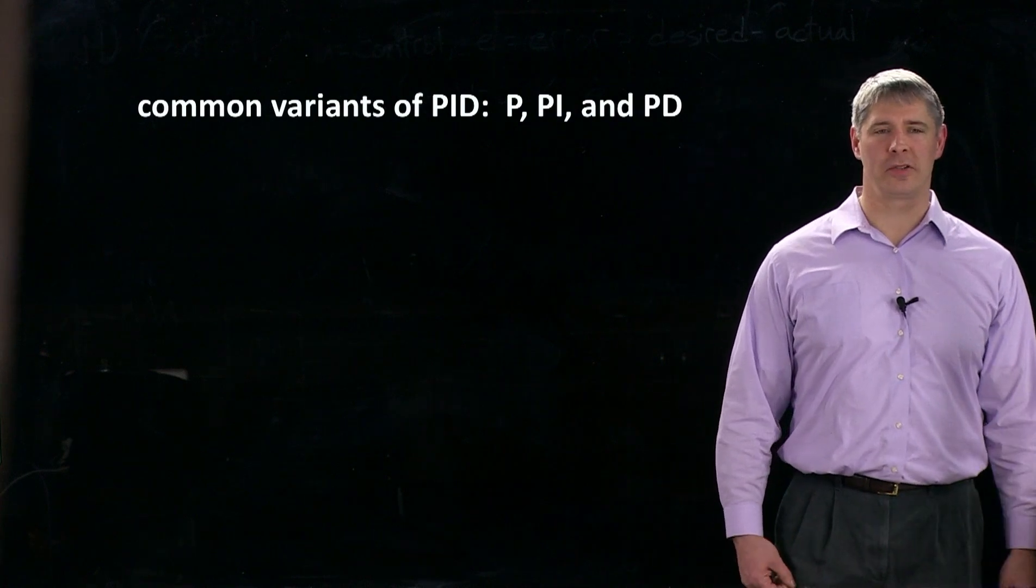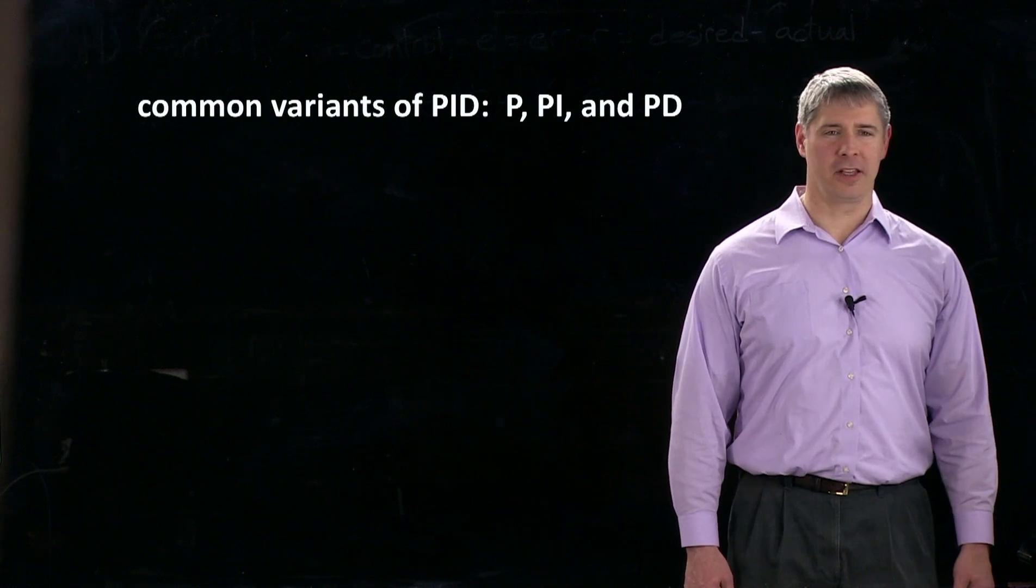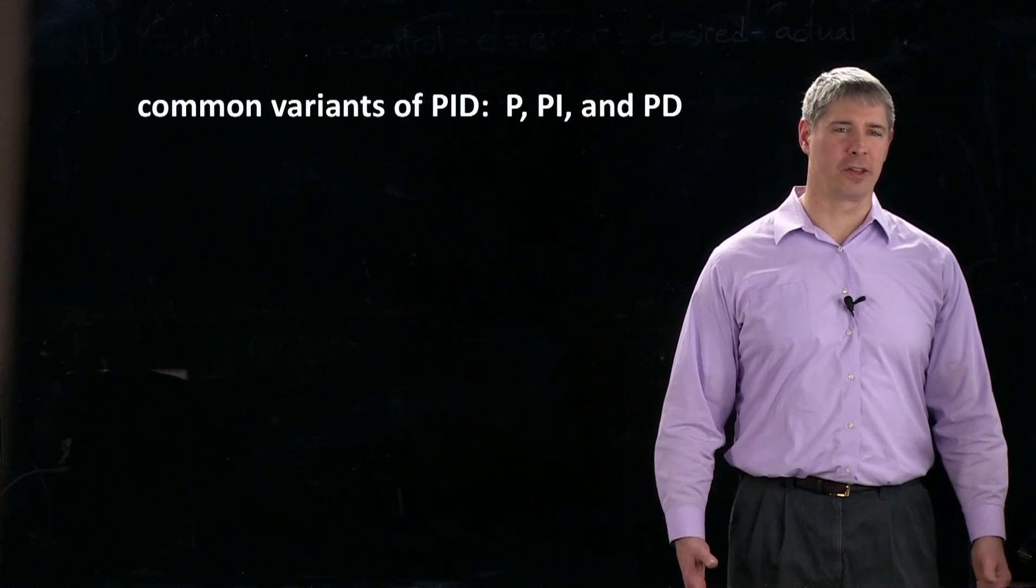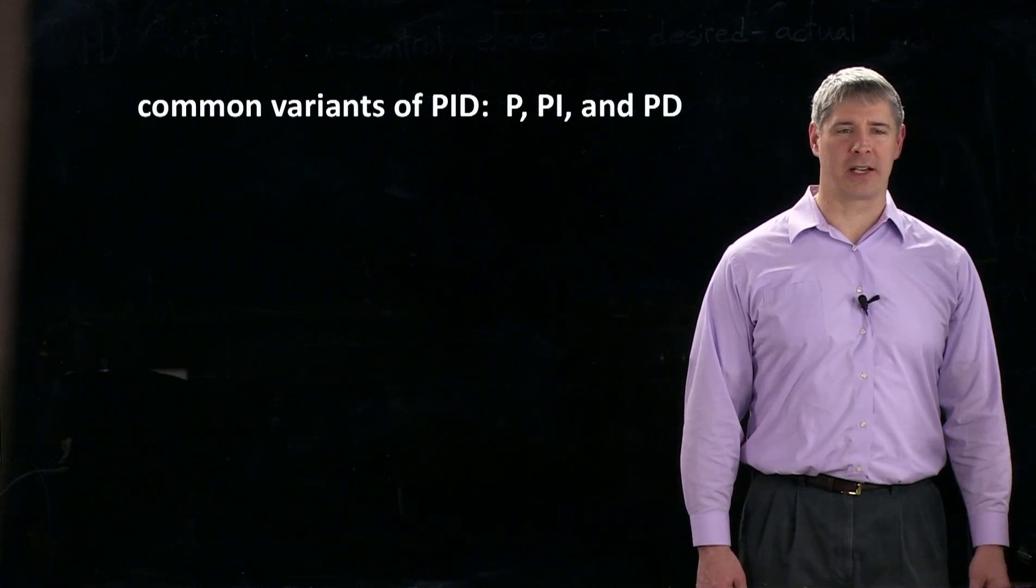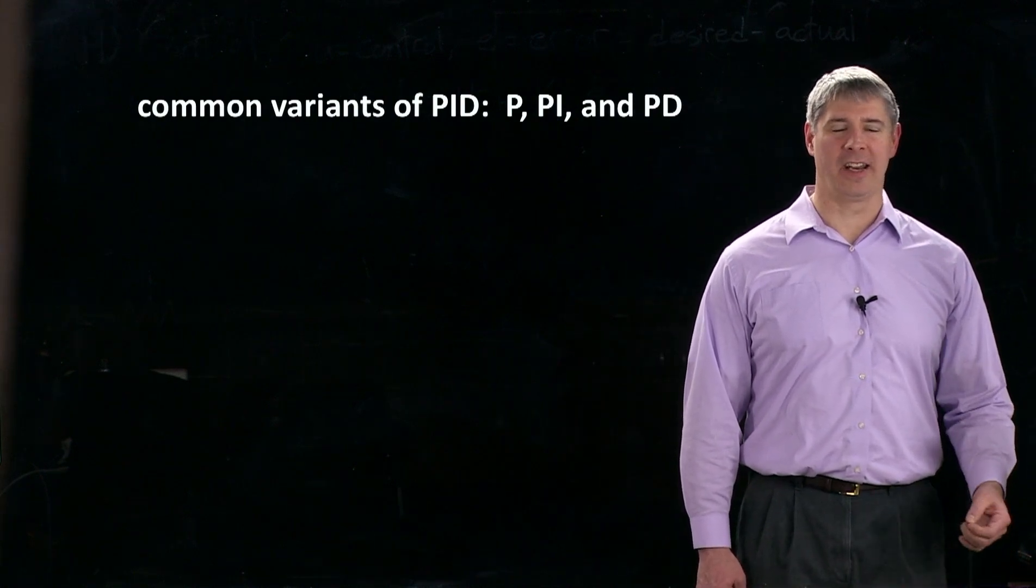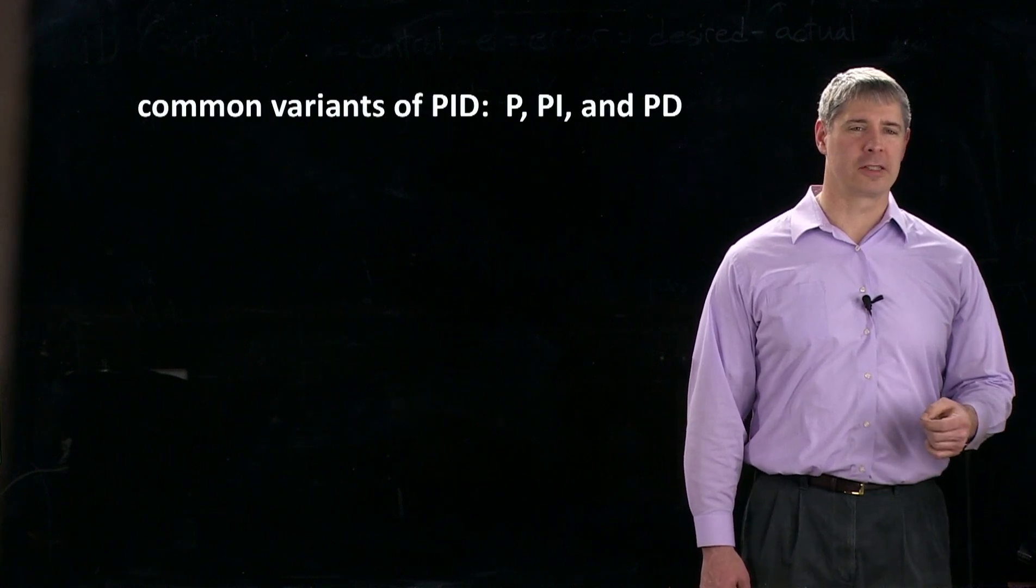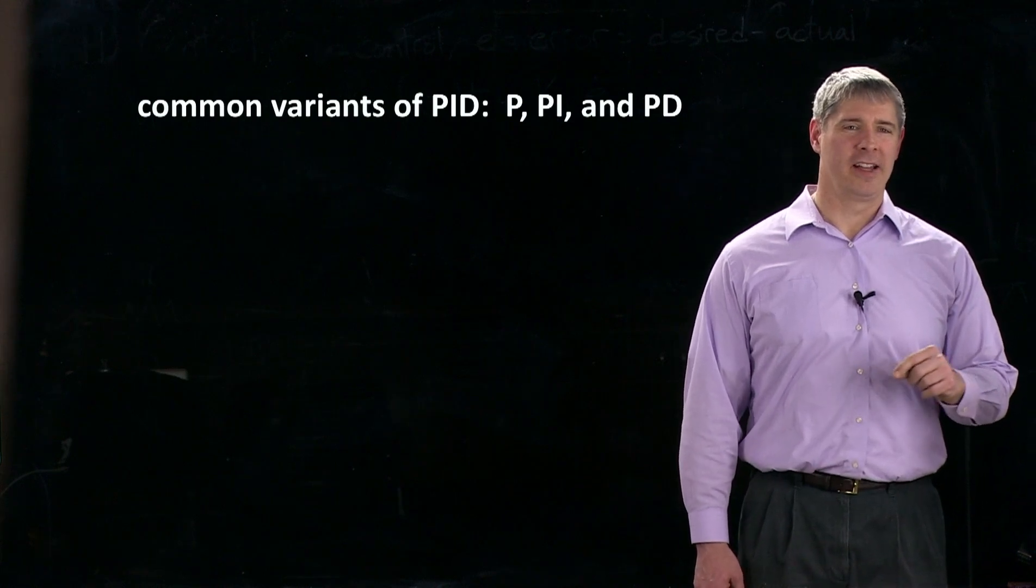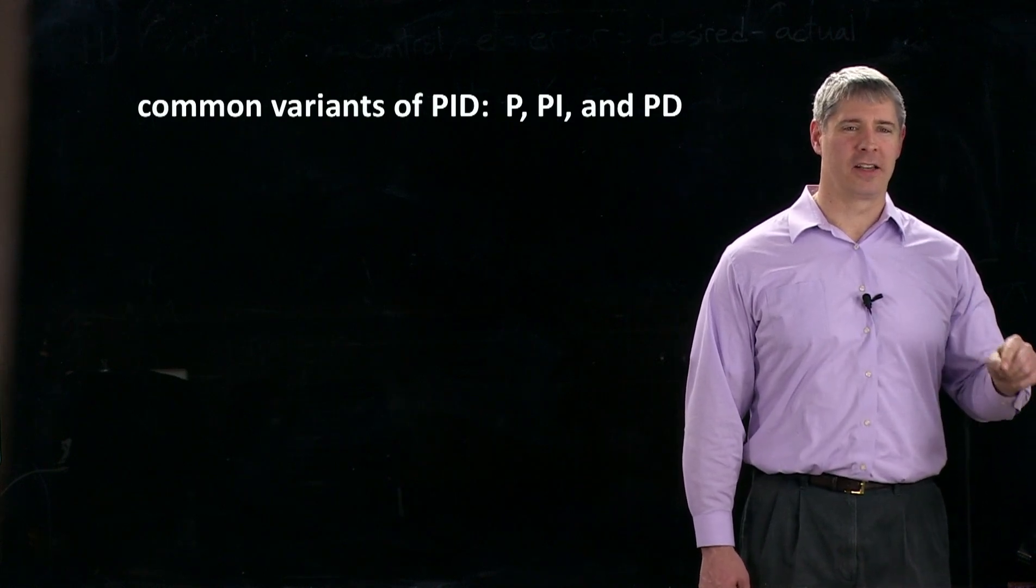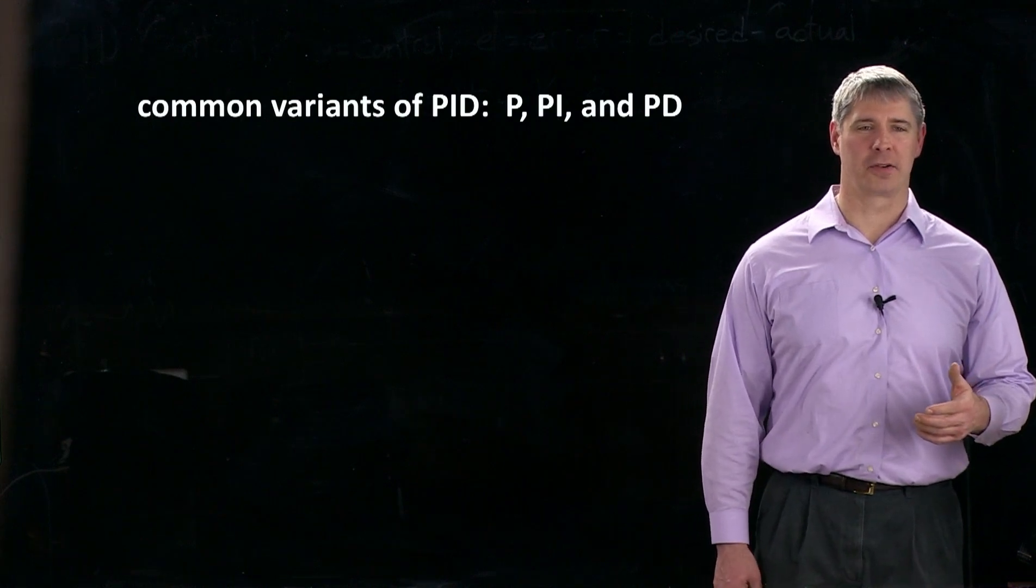Now which one of these you want to use depends on the dynamics of your system, the kind of sensor that you have, and how quickly the reference signal might be changing. But one important aspect is the dynamics. If you look at the order of the system, which refers to how many integrations away the controlled output is from the input, that can often help you decide which kind of controller to use.